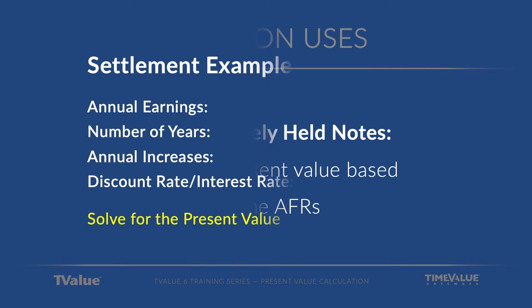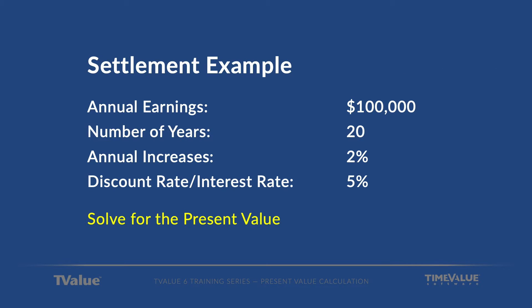Let's do a settlement example. We'll have annual earnings of $100,000 for 20 years. We're going to factor in a 2% increase and discount it back at 5%, to see what the present value of that $2 million is worth in T-Value. So let's jump into T-Value.